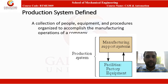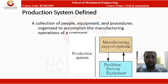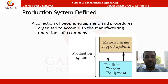The production system is defined as a collection of people, equipment, and procedures organized to accomplish the manufacturing operations of a company. The production system includes manufacturing support systems with their integration of facilities, factories, equipment — it is a collection of all these people, equipment, procedures, and factory facilities.